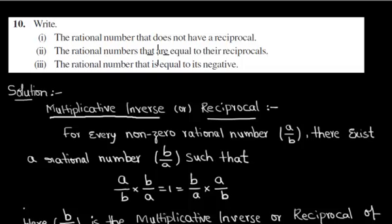In this problem, we have to find out the rational numbers that are equal to their reciprocals. Before that, we will discuss what is reciprocal or multiplicative inverse.